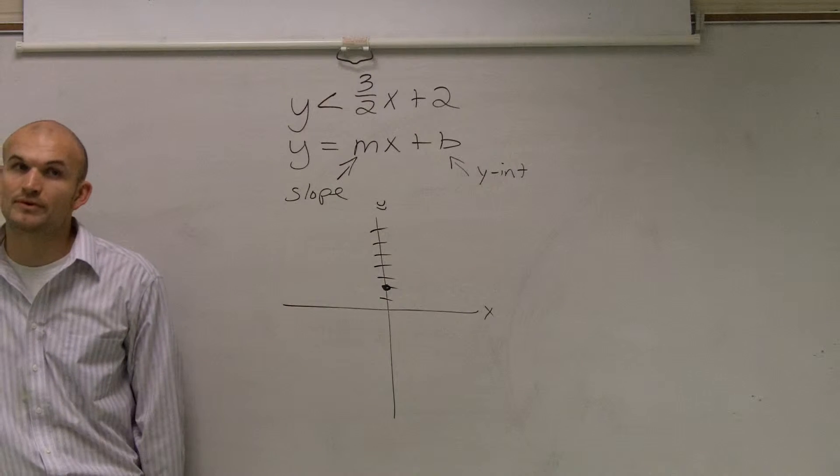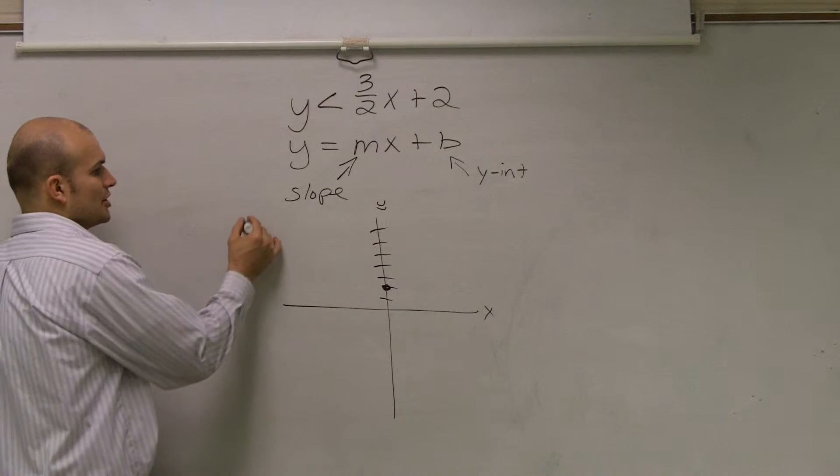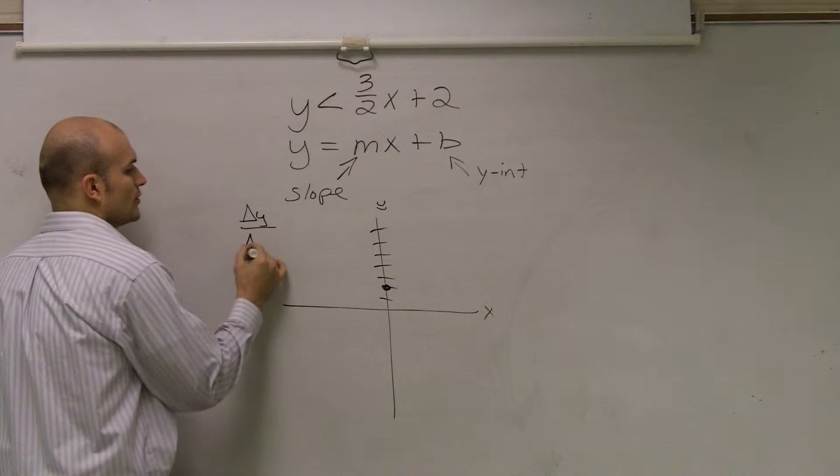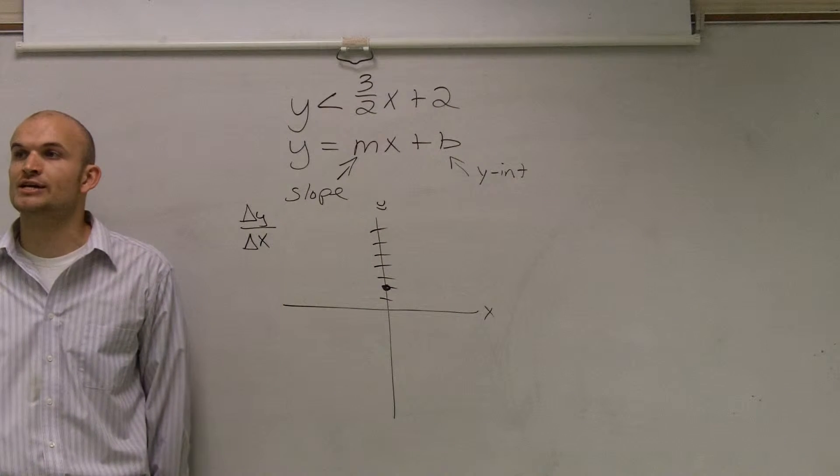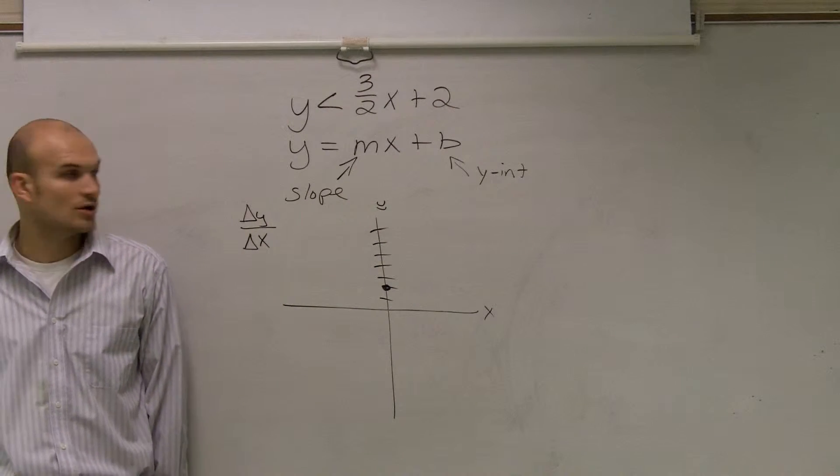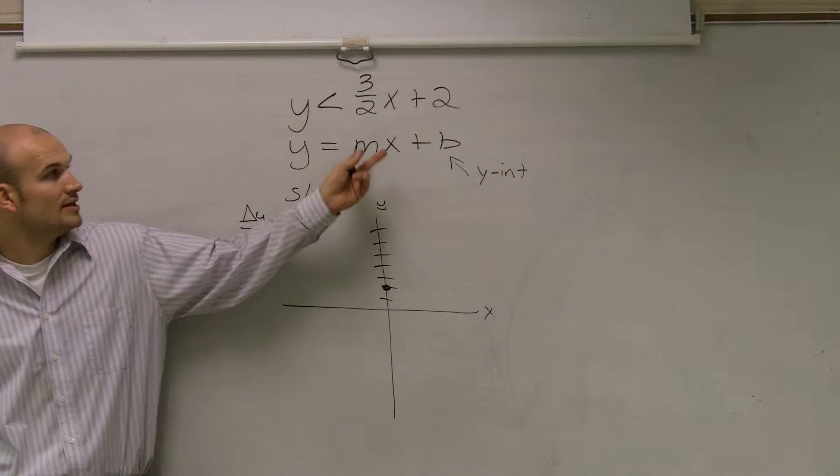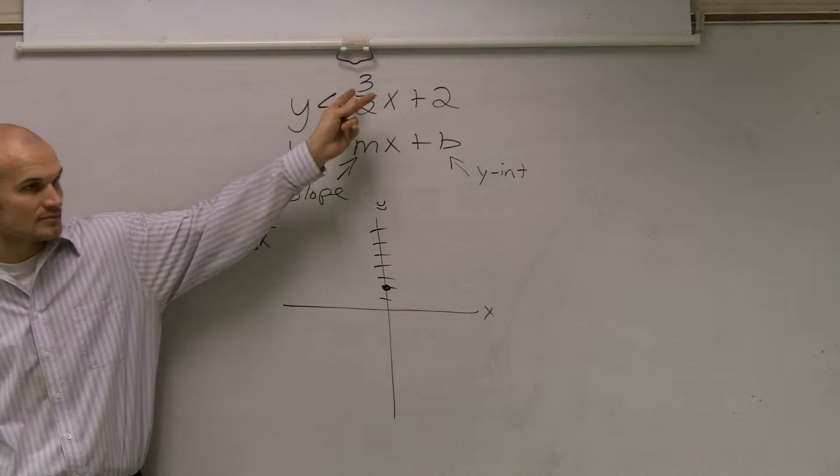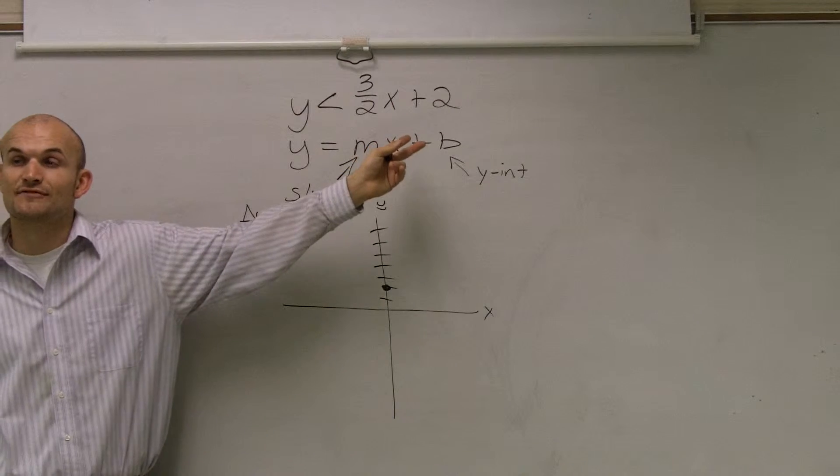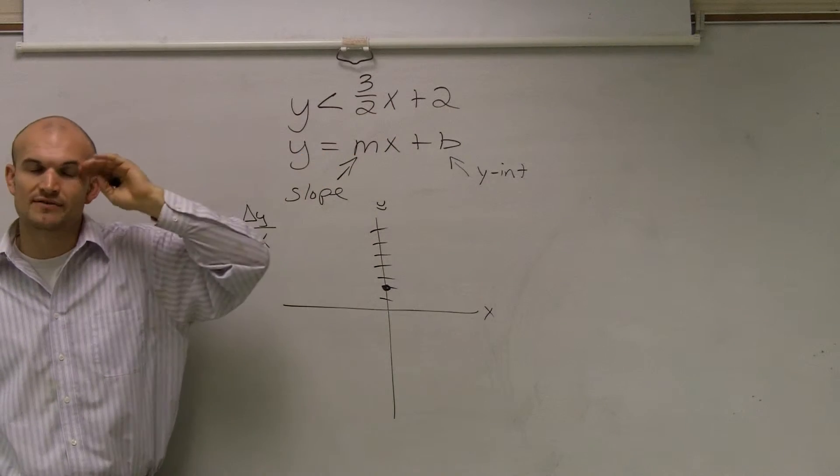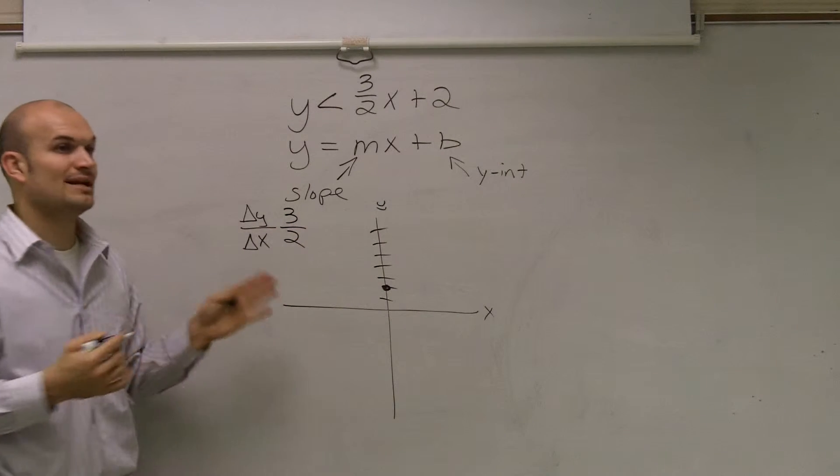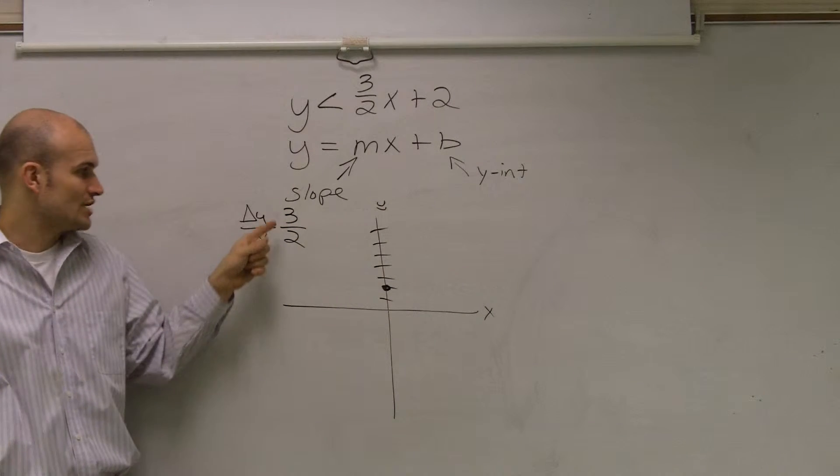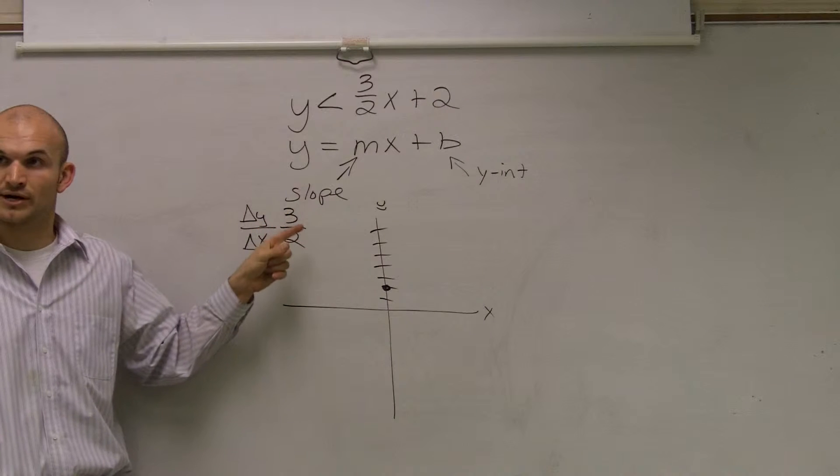Now the next thing is we need to remember the slope. Remember, the slope is the ratio of your change in your y-coordinates over the change in your x-coordinates. So what we need to look at is, is our slope a ratio? And if it's not, if it's a whole number, put it over 1 so it's a fraction. Well, we can say our ratio is 3 halves. So between any two points on the line, the change in the y-coordinates is positive 3.